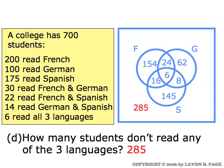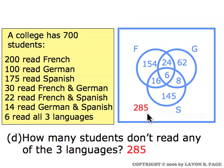How many students don't read any of the three languages? This is where we need to bring into play the final piece of information we haven't yet used — that the college has seven hundred students. We had already accounted for all those who studied at least one of the languages. For the total to be seven hundred, we subtract all those numbers from seven hundred to find that there must be two hundred and eighty-five outside the three circles — students who don't study any of the three languages.